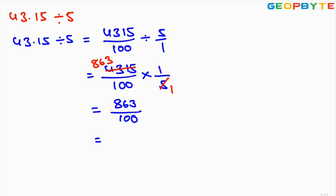We have 863 by 100. Whenever we divide any number by 100, we need to move the decimal point from right to left by 2 places. Moving 2 places, we get 8.63. The result of 43.15 divided by 5 is 8.63.